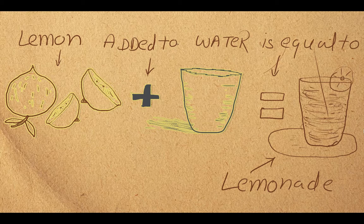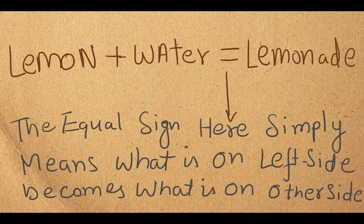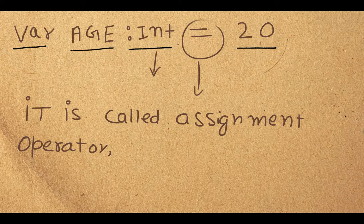The equal sign makes the lemon water — simple as that. In programming, to check if two things are exactly equal we use three equal signs — I will explain that in a later section. This equal sign is called the assignment operator. You are going to use this sign so many times — it must be clear to you. The left side becomes the right side.